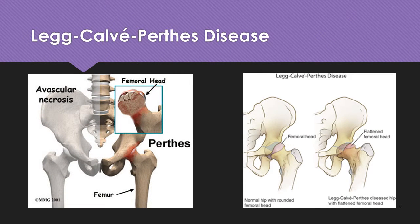We're going to look at Legg-Calvé-Perthes disease. The pathophysiology: it's aseptic necrosis of the femoral head, self-limiting and idiopathic. It occurs in children 2 to 12 years of age, most commonly in white males 4 to 8 years of age.